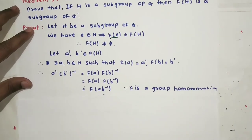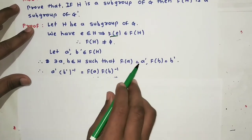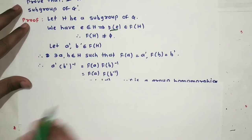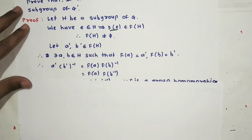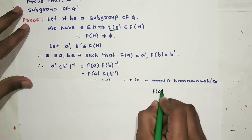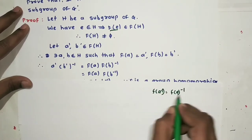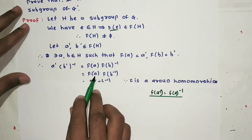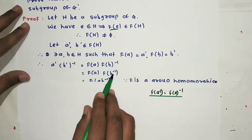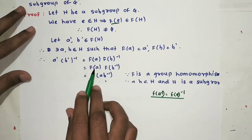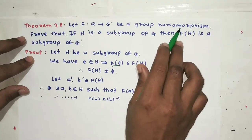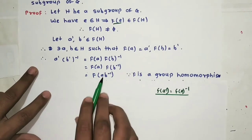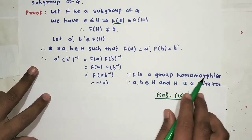Consider a' · (b')⁻¹ = f(a) · (f(b))⁻¹. From the last theorem, (f(b))⁻¹ = f(b⁻¹). Since f is a group homomorphism, we can write f(a) · f(b⁻¹) = f(a · b⁻¹).